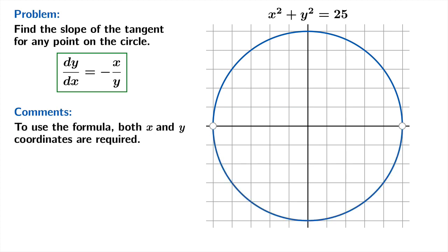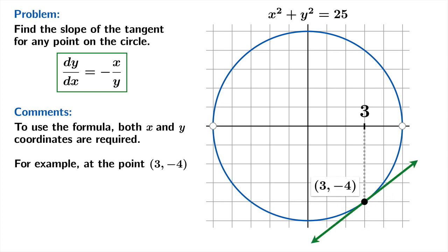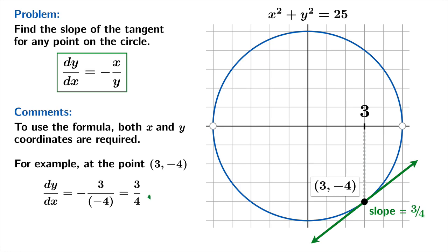Generally, using this formula requires both the x and y coordinates. Going back to our earlier problem — the point on the lower half where x = 3 — we find the y coordinate is −4, then plug both coordinates into dy/dx = −x/y to obtain 3/4, confirming the tangent slope at that point.